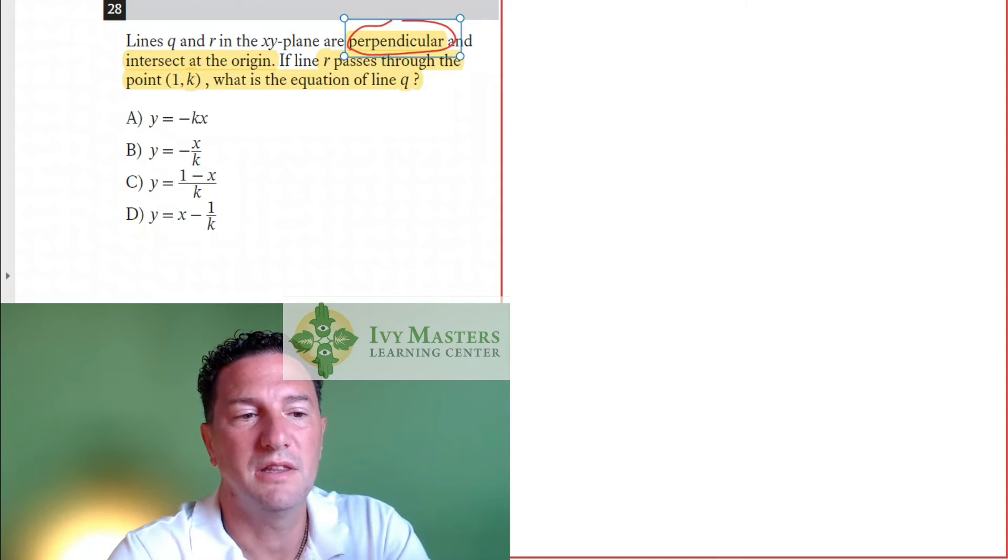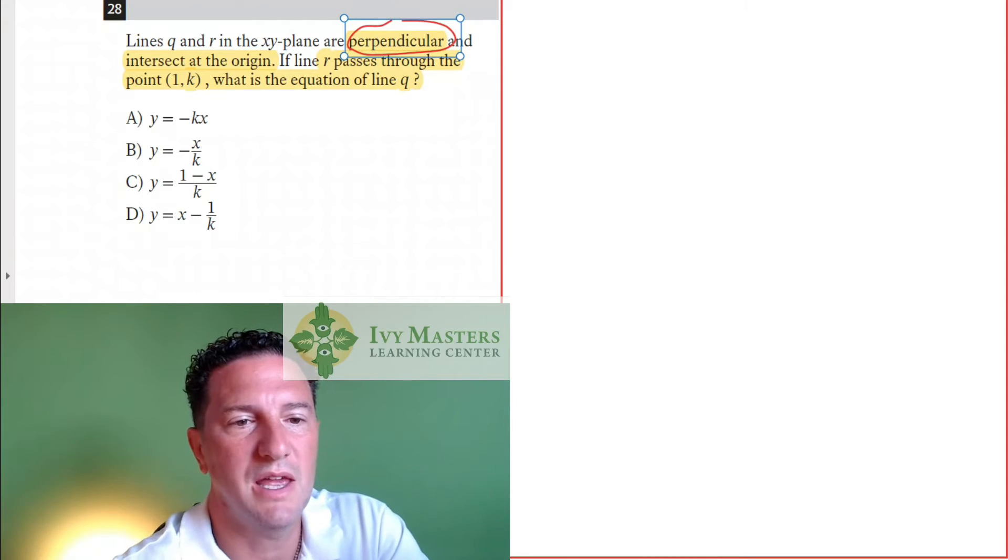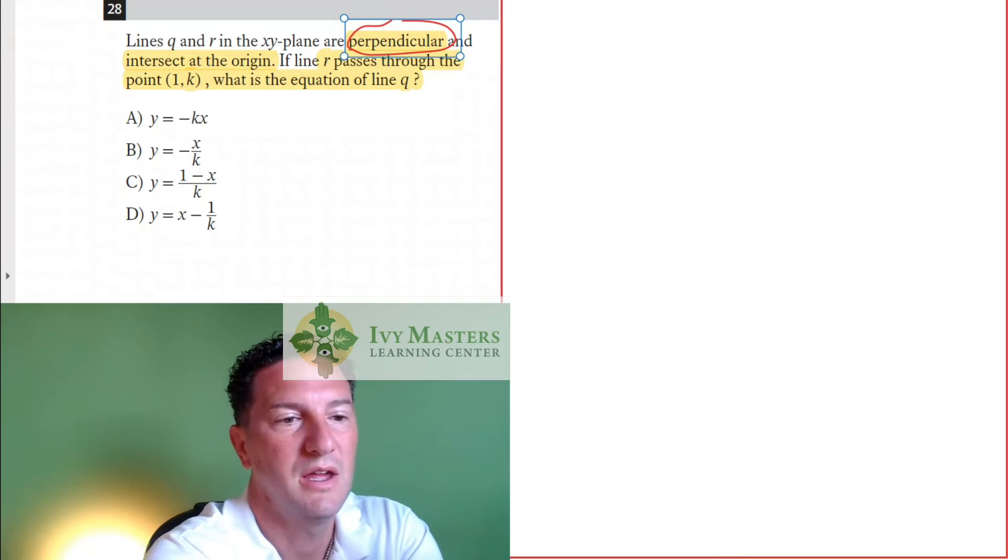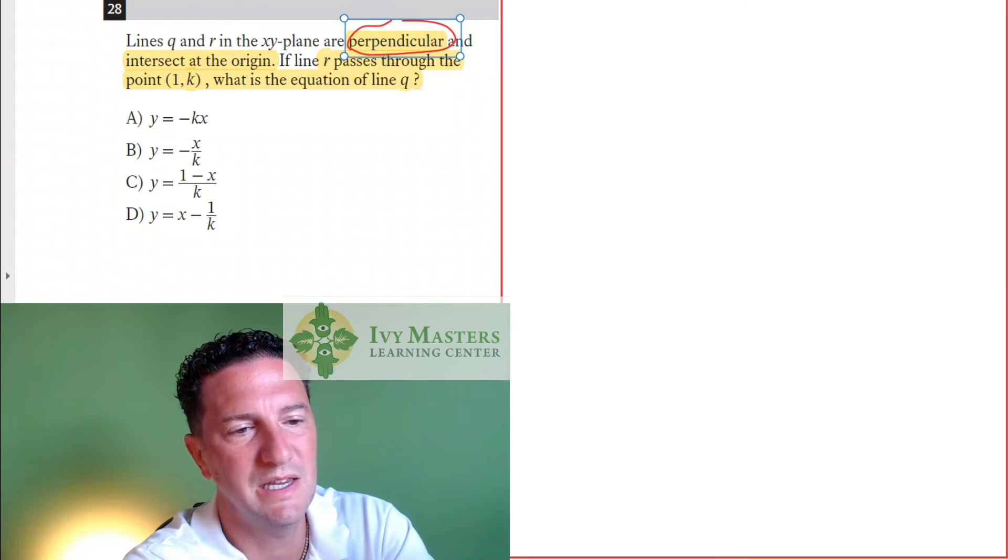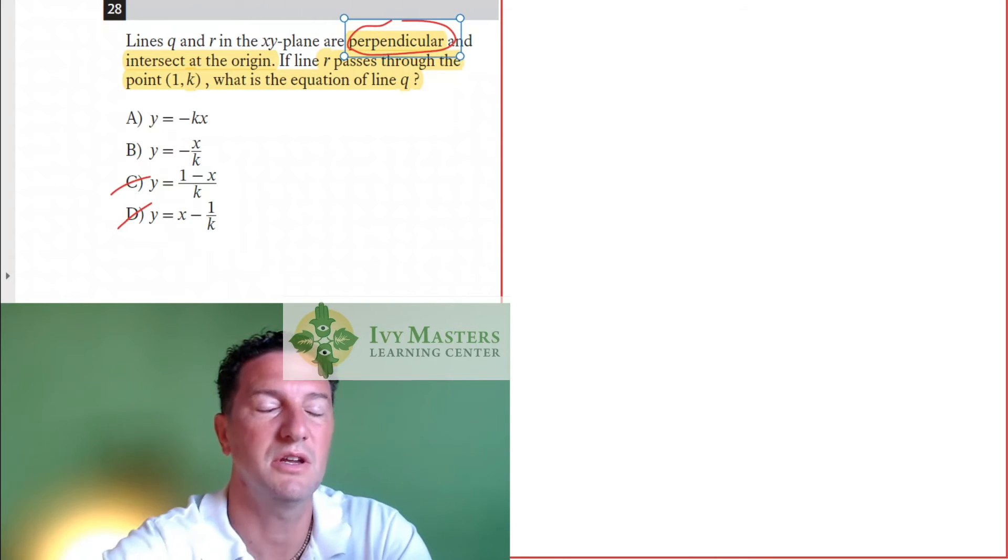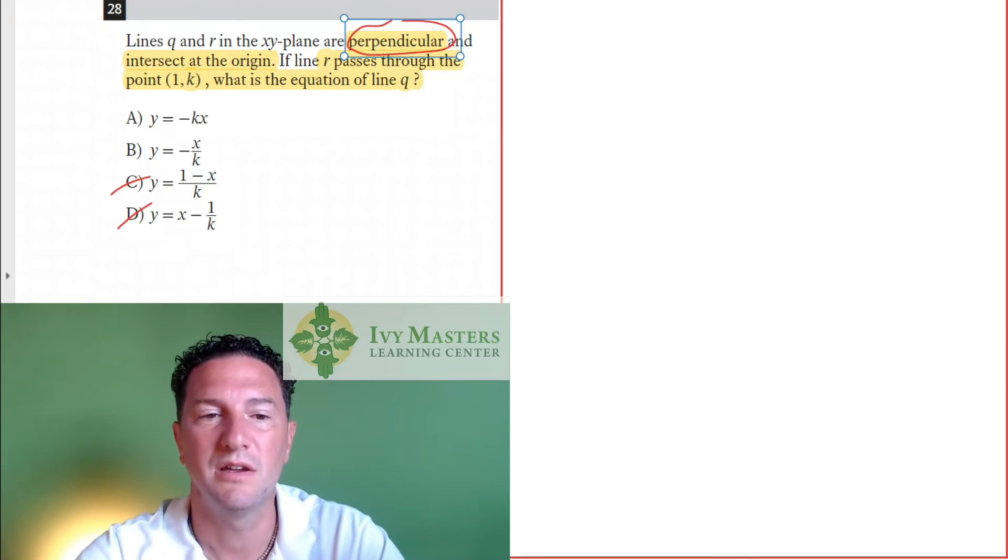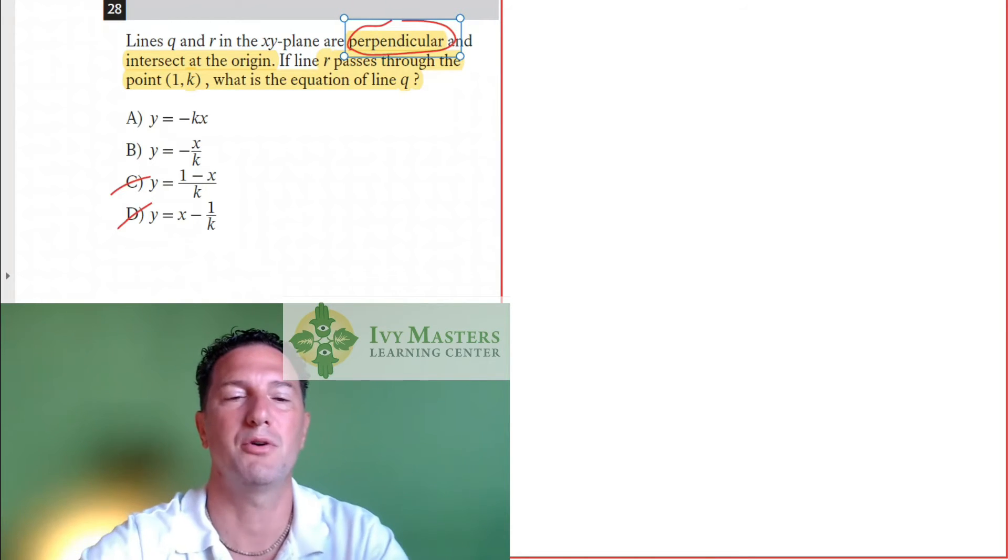What I'm going to do is I'm going to look at the answer choices. So answer choice A, if that's the equation of line Q and line R is perpendicular to it, first of all, does (0,0) work there? Yes, because they intersect at the origin. Answer choice A and B, (0,0) works. And answer choice C, (0,0) does not work because 0 does not equal 1 over k. Answer choice D, (0,0) doesn't work because 0 doesn't equal negative 1 over k. So you could eliminate those right away. That makes your life easier than checking for the perpendicular slopes.